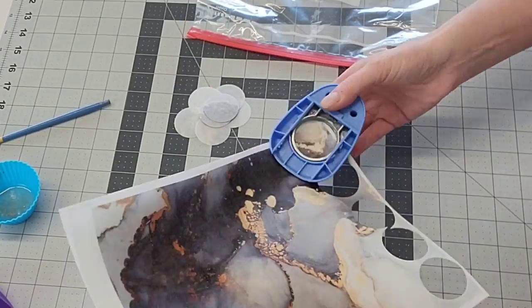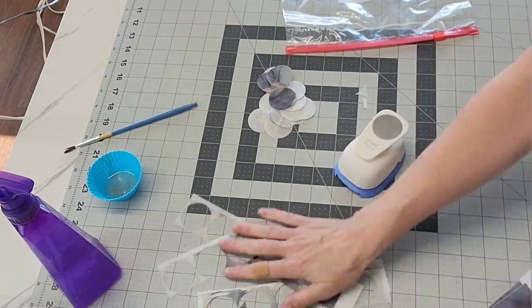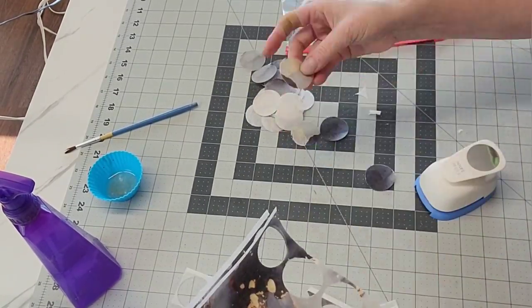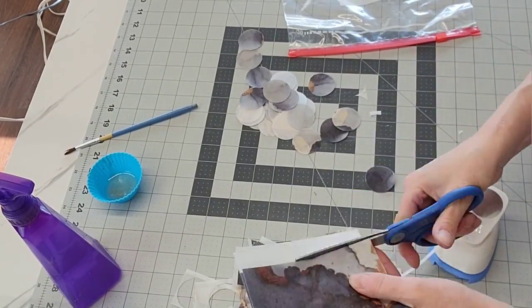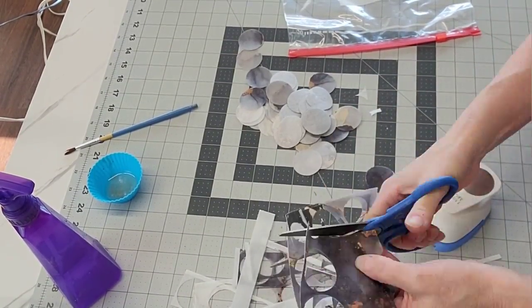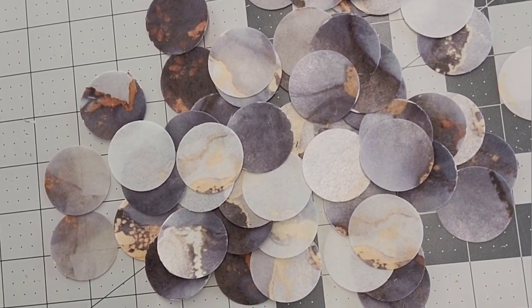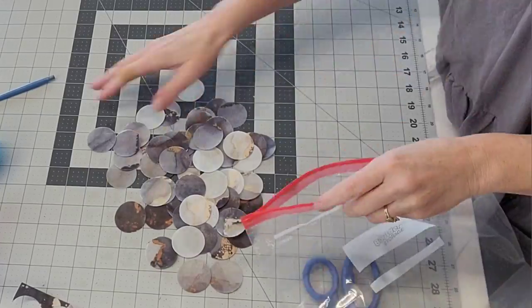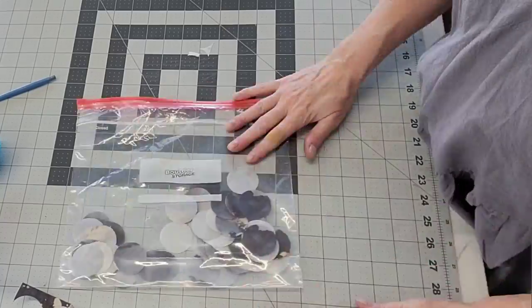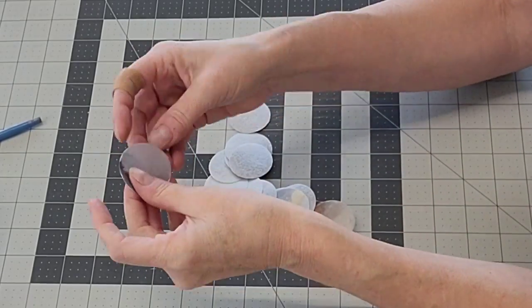So what I'm using is just a hole puncher, and I am cutting out these holes out of the wafer paper. Now I did two to three sheets of the wafer paper, and this is what it looks like. Now to store your wafer paper while you are working with it, just put it in a ziploc bag so that it does not dry out. Pull out the amount of circles that you need to work with at a time.